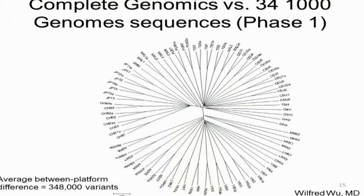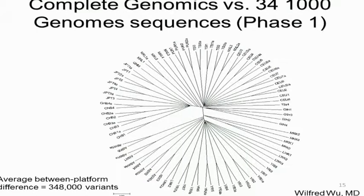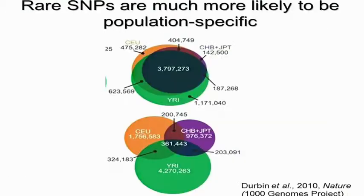Wilfred also compared sequence results in the Complete Genomics data — 34 of those individuals were also sequenced as part of the 1000 Genomes Project. You can see two tips for each of those individuals representing the two different sequencing results, and there are some differences. The individuals do group with themselves, but on average the between-platform difference was about 348,000 variants, reflecting differences in depth of coverage as well as differences inherent to the platforms — some interesting inter-platform heterogeneity.